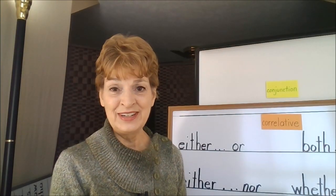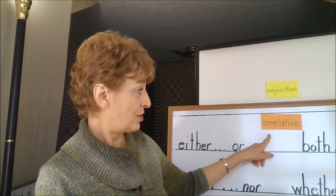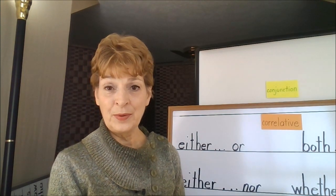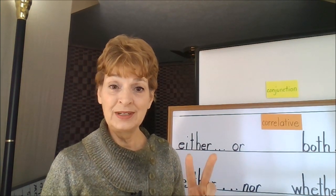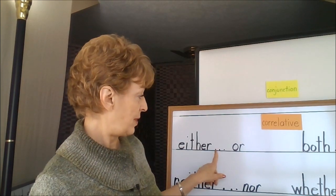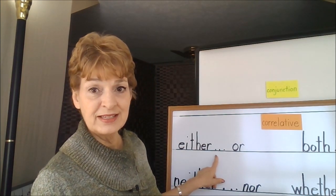Another category of conjunctions is correlative. The correlative conjunctions have two conjunctions that are separated with other words in the sentence.